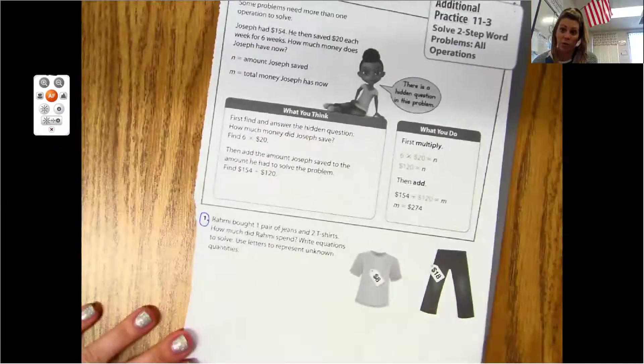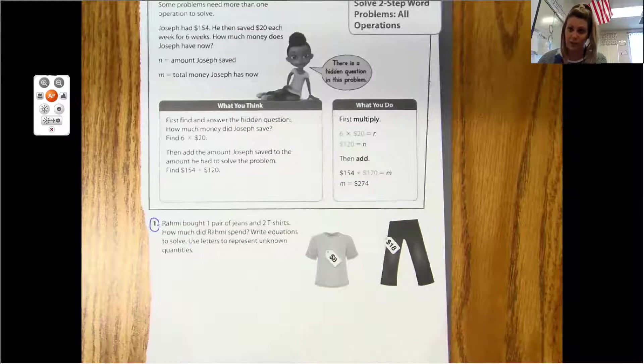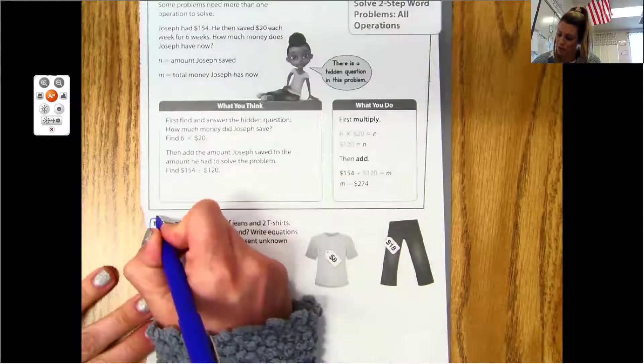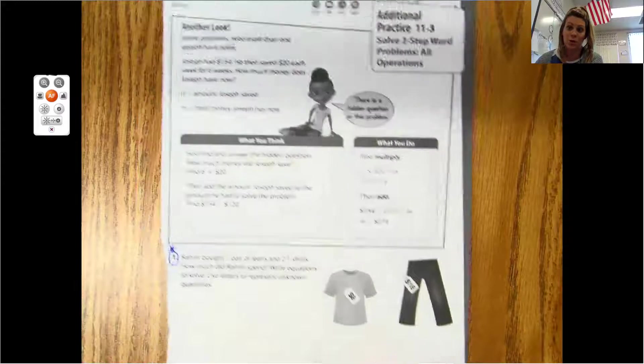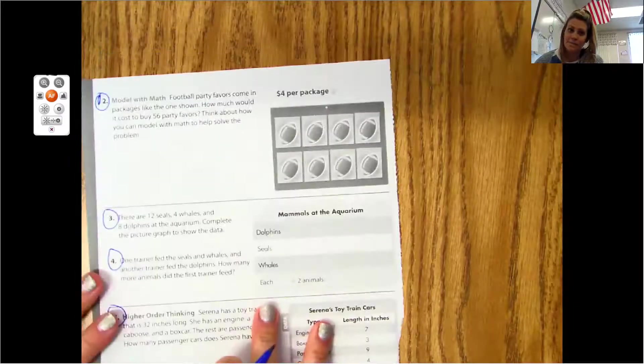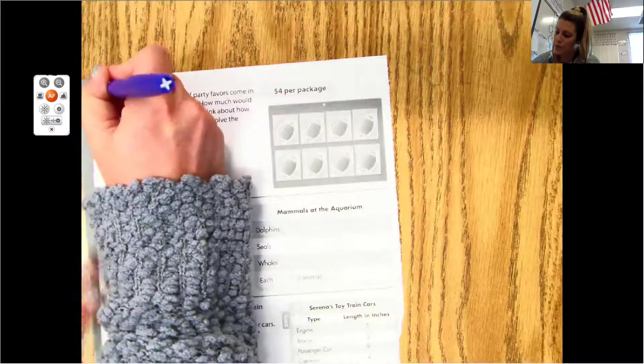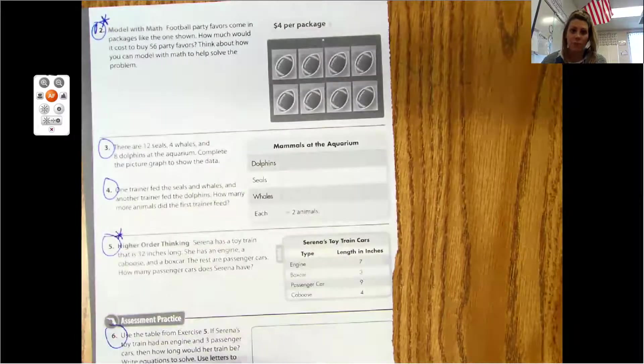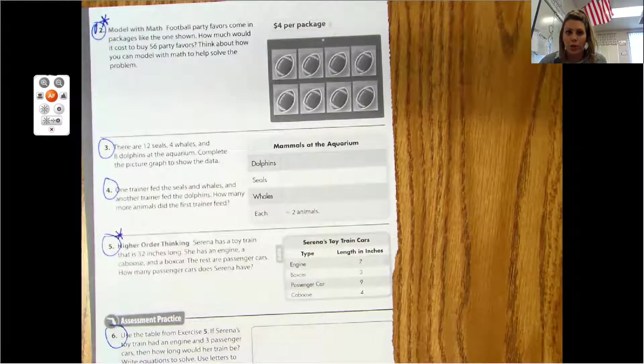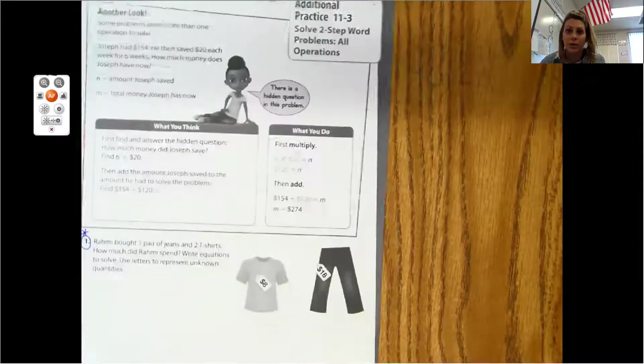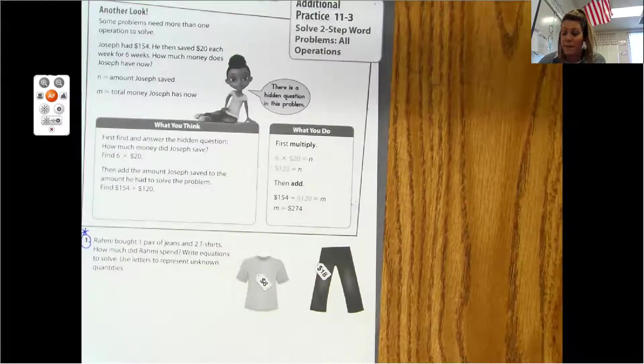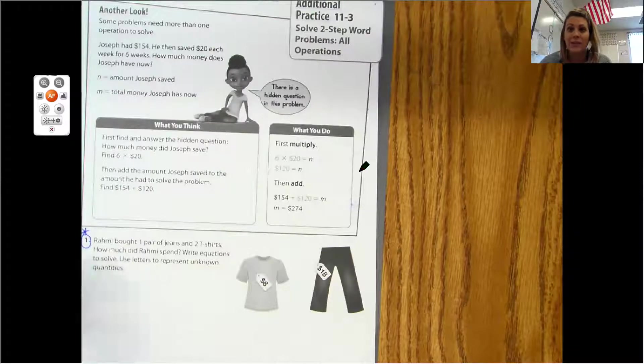You are going to do all of the problems on the front and on the back. It's really important that mom and dad are going over this with you and checking it. When they have gone over it and you've fixed any mistakes or celebrated getting them all right, you are going to post three of the answers. Put a star next to number one, number two, and number five - those are discussion post questions. Make sure you're looking for those keywords, thinking about the hidden question, and thinking about the numbers you're using. Have a great day and I'll talk to you later.